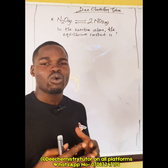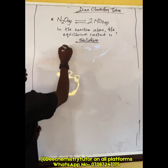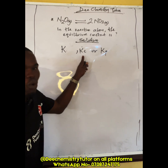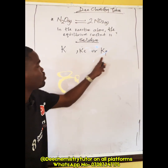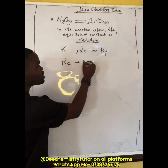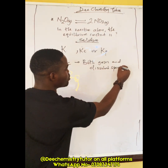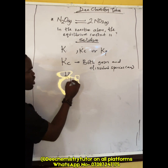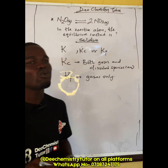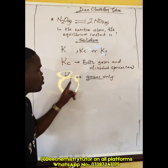When asked to write the equilibrium constant for a reaction, the equilibrium constant K can either be Kc or Kp. Kc means equilibrium constant for concentration, while Kp means equilibrium constant for pressure — as you can see from the letters c and p. For Kc, you consider both gases and dissolved species (aqueous). For Kp, you consider gases only, since pressure only affects gases.